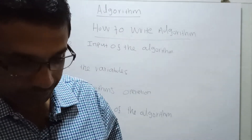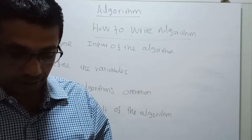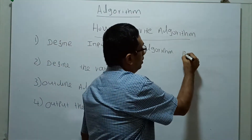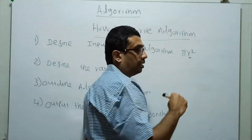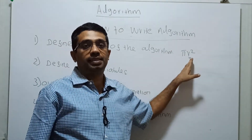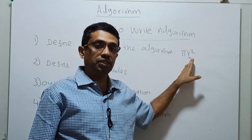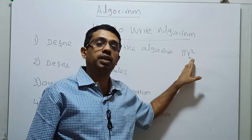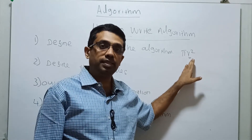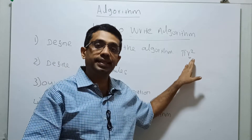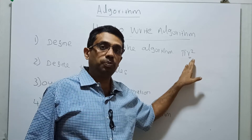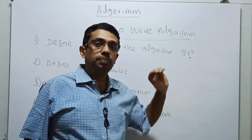The formula to calculate the area of a circle is pi r squared. Here, r is the radius, so I have to get the radius as the input. Likewise, for each problem you should be very clear about your input — to add two numbers you get two numbers as input, to find the biggest of three numbers you get three numbers as the input.